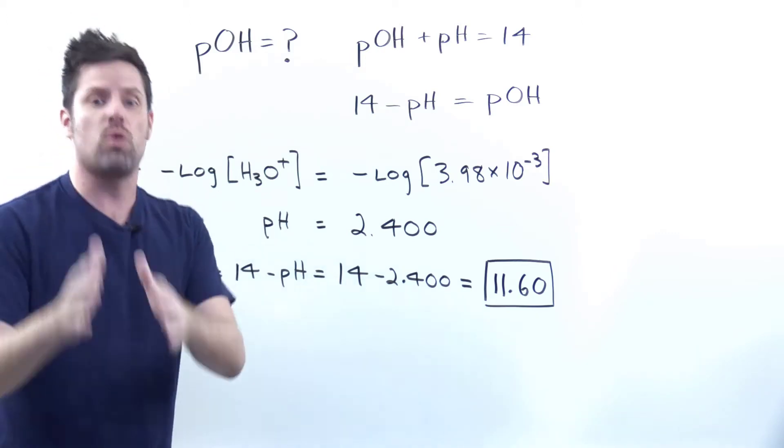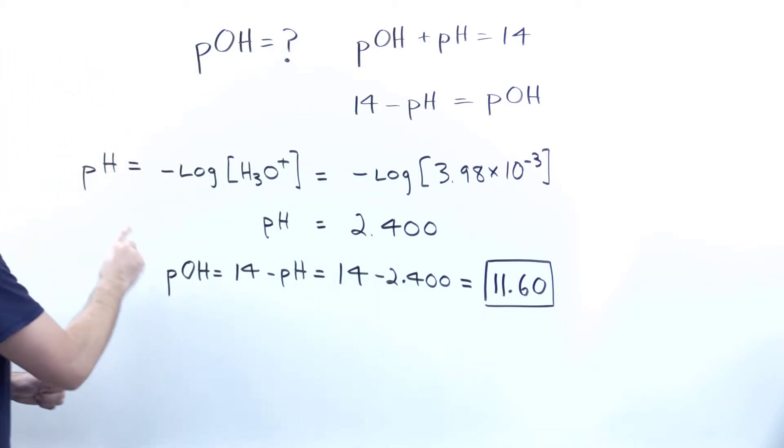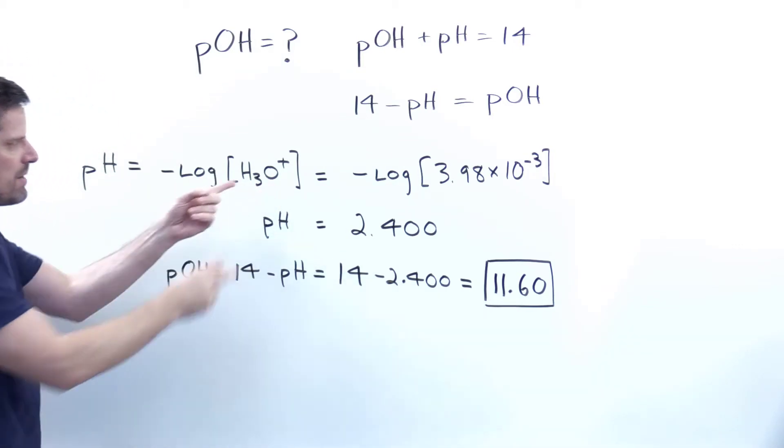We've been given the hydronium or H3O plus concentration in this set of circumstances. According to another equation that we should know, pH is equal to the negative log base 10 of hydronium or H3O plus.